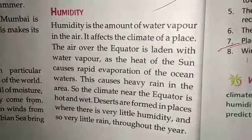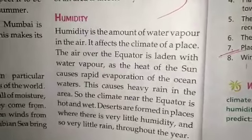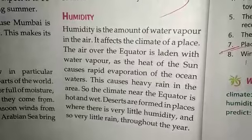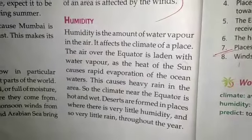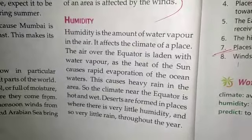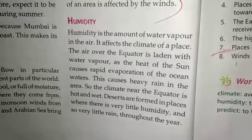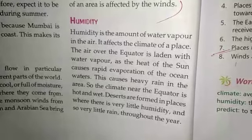The next factor affecting climate is humidity. Humidity is the amount of water vapor in the air, and it affects the climate of a place. The air over the equator is laden with water vapor as the heat of the sun causes rapid evaporation of ocean waters, causing heavy rain in the area. So the climate near the equator is hot and wet. Deserts are formed in places where there is very little humidity and so very little rain throughout the year.